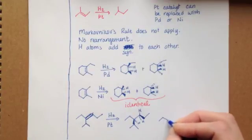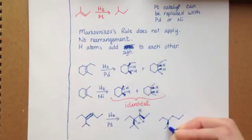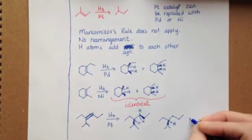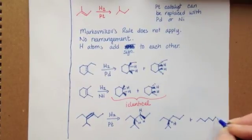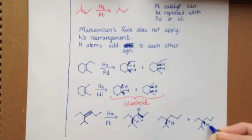This is our only chiral center. We've got two enantiomers that we can draw. One that looks like this, and one that looks like that.